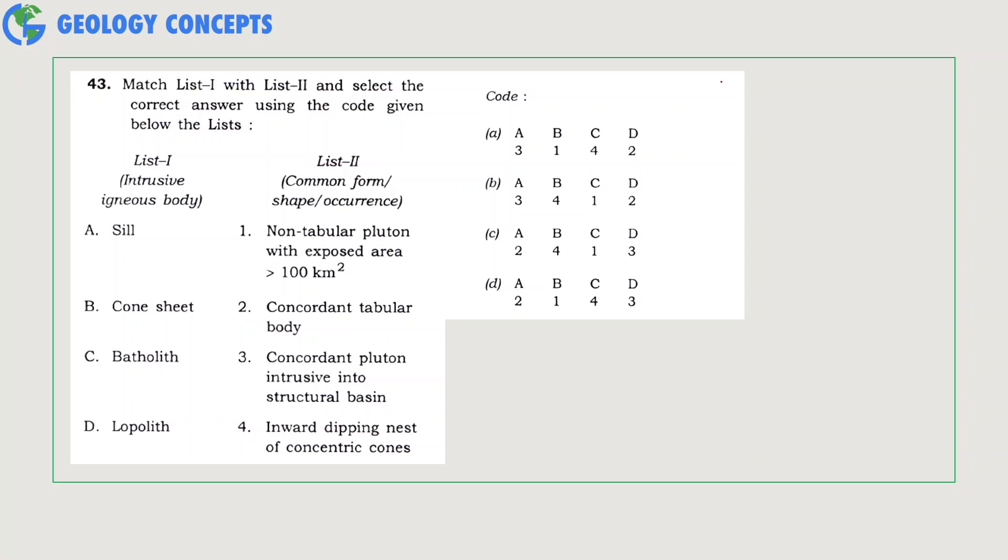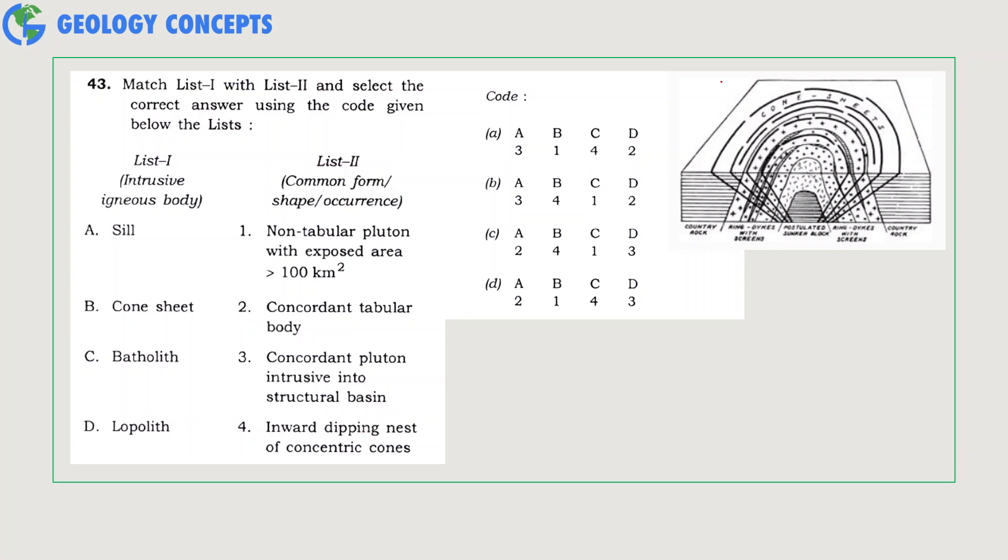The question asks us to match the intrusive igneous body with their form, shape, and occurrence. A sill is a concordant tabular body which usually occurs parallel to the bedding plane or the plane of weakness. As you can see from the figure, cone sheets have inward dipping nests of concentric cones. Batholiths are large plutons with exposed area greater than 100 square kilometers. So option C matches suitably and is the correct answer.